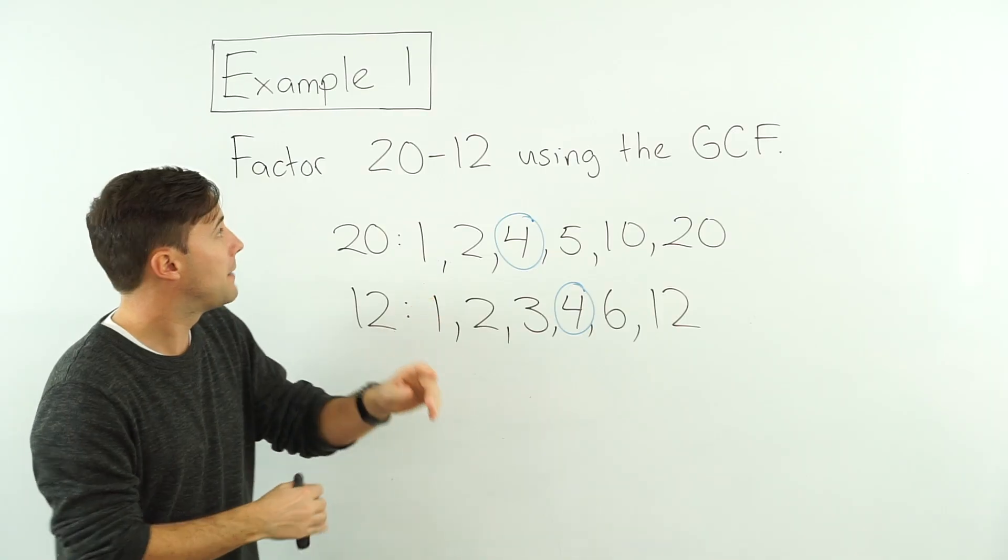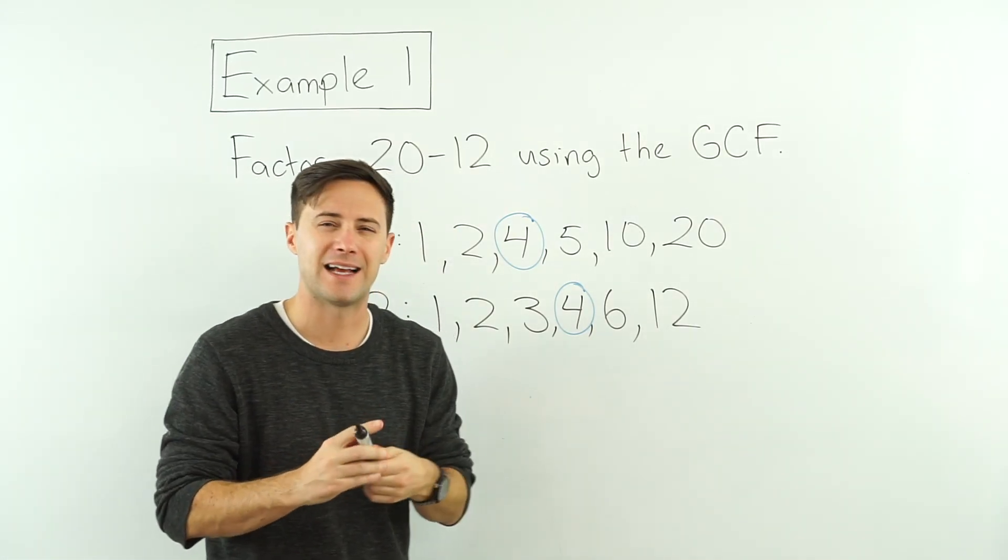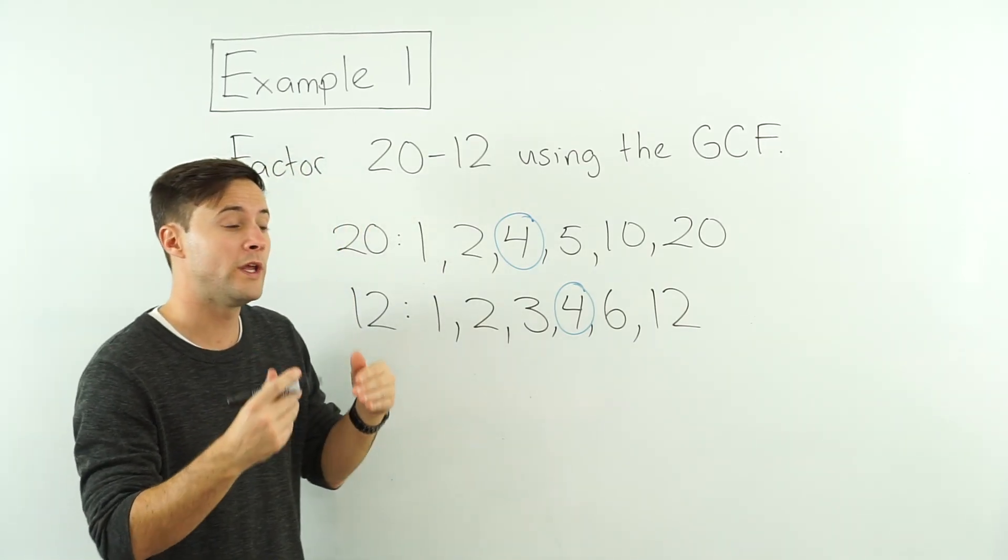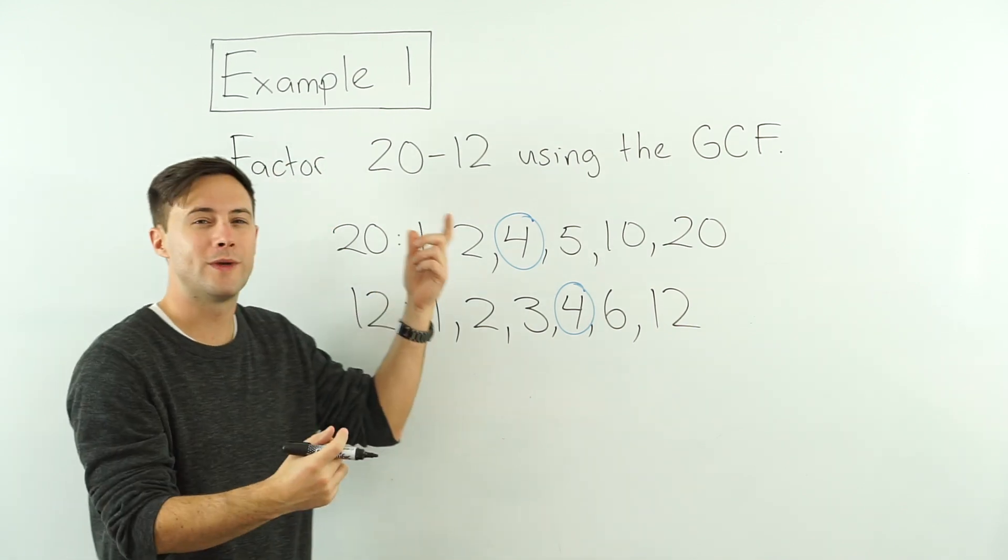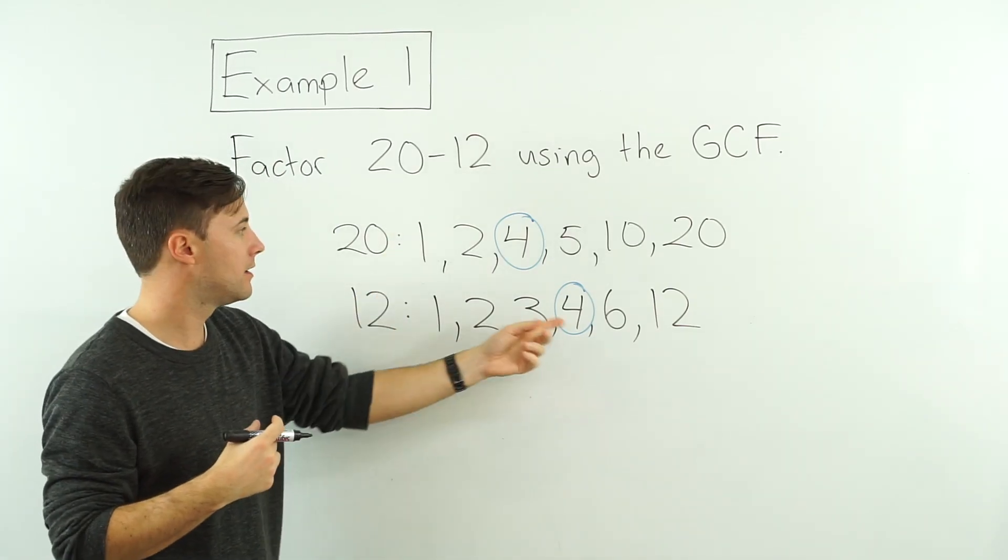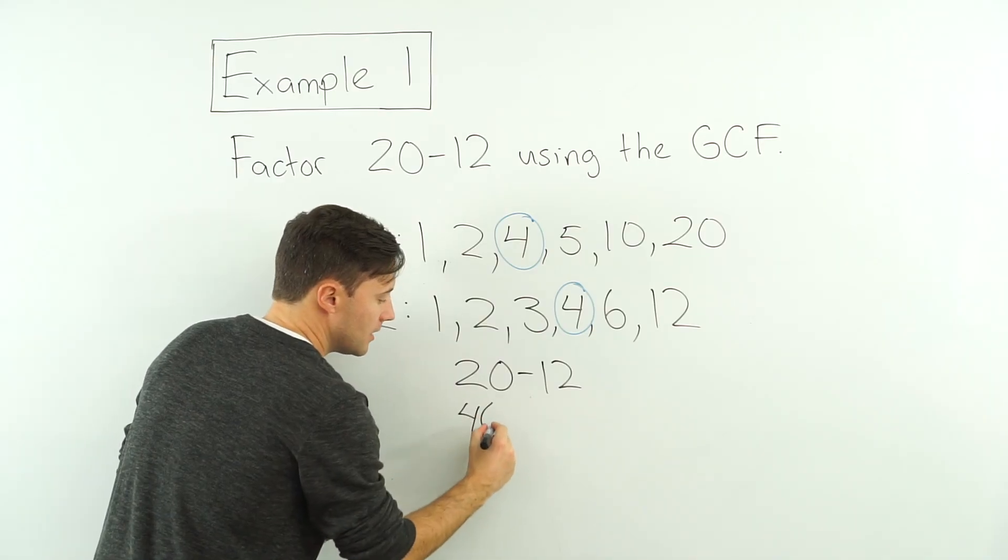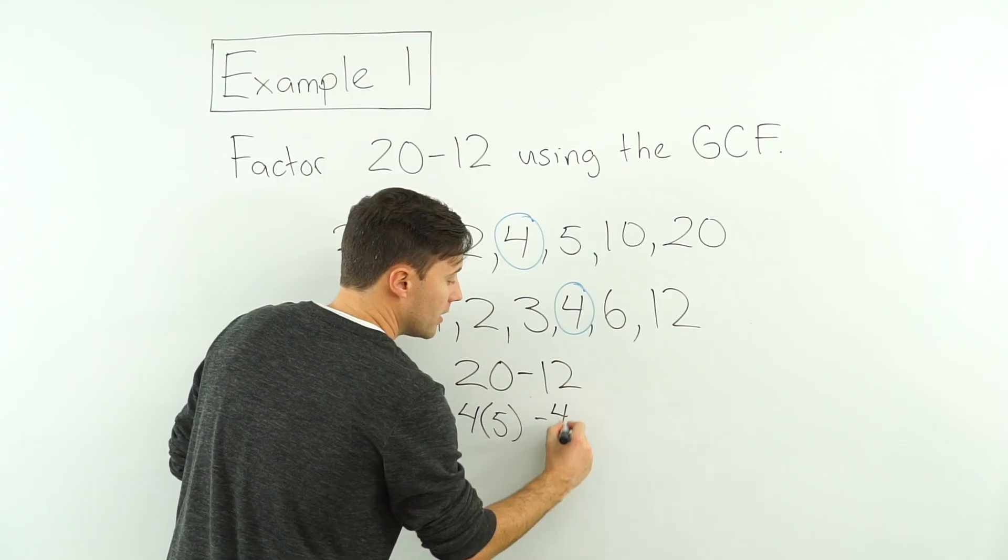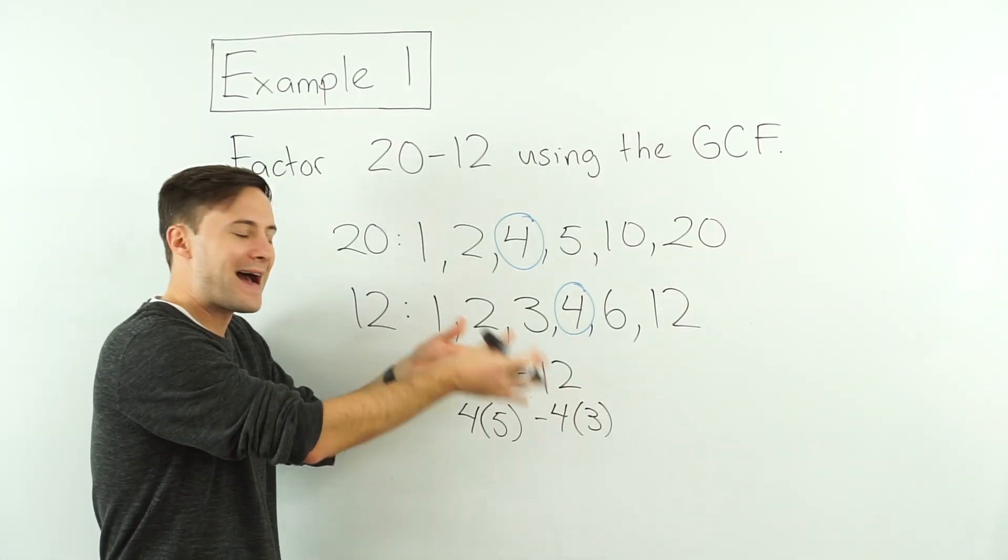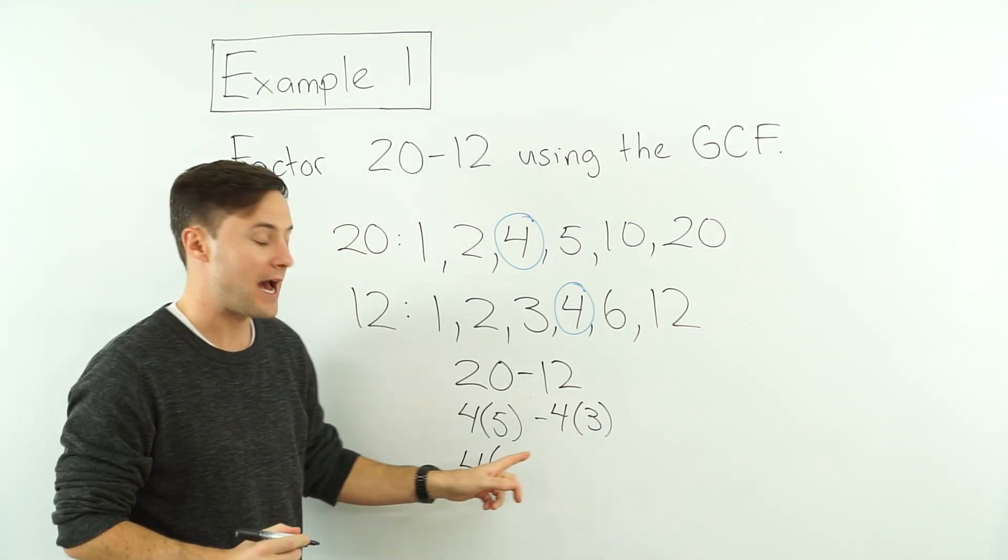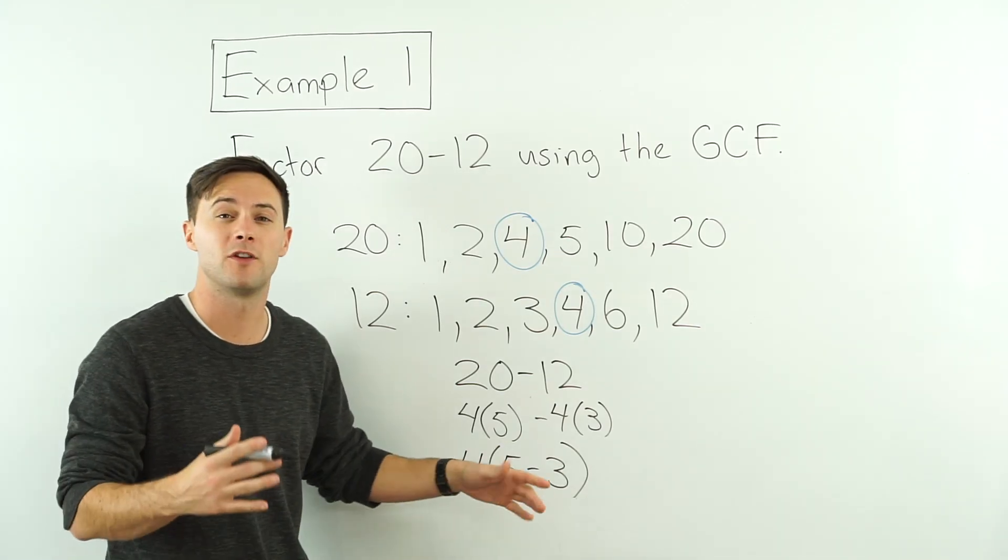Hopefully this is review. What that means is we are going to factor out the 4 from these two numbers. So you can think of this as kind of the reverse of the distributive property. When we use the distributive property, we multiply whatever we're distributing to every term in the parentheses. What we're doing now is we're factoring out, or we are dividing each term by that greatest common factor. So let me show you what I mean. 20 minus 12. Well, we can think of 20 as 4 times 5 minus 12 as 4 times 3.